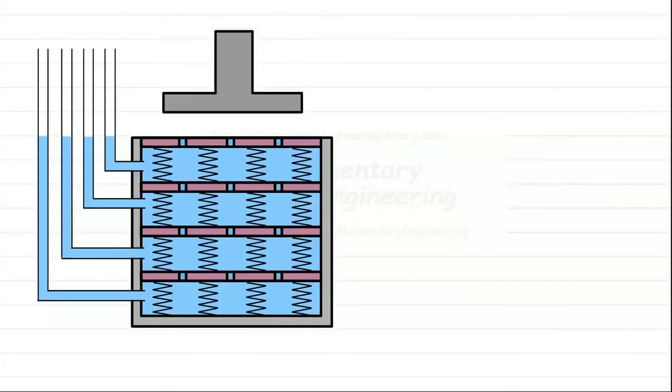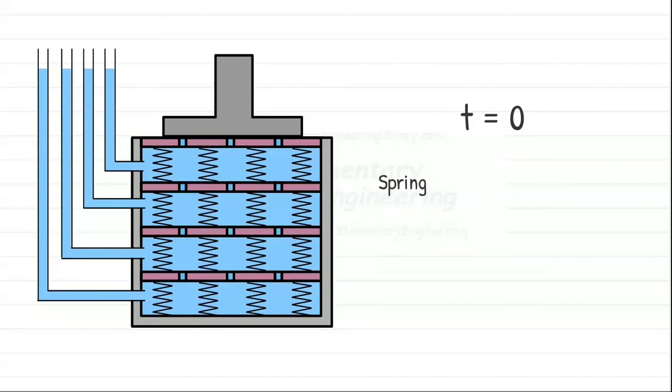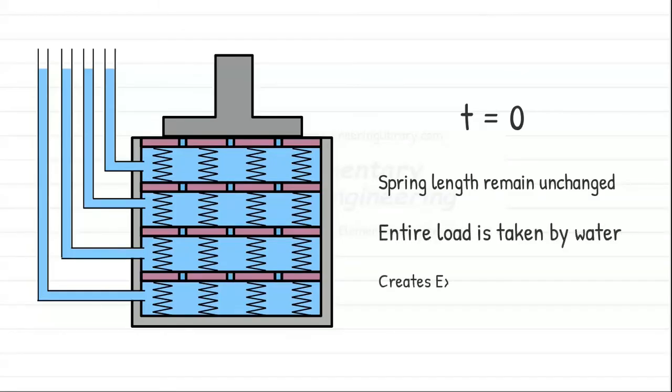When a load is applied to the top piston, water cannot escape instantly through the perforations. The springs remain at their initial length as they cannot carry load until they are compressed. Therefore, the entire load is initially taken by water creating excess pore water pressure. The water in all the piezometric tubes rises to the same elevation above the original water level in the vessel. It is called excess pore water pressure because it is in excess of the original hydrostatic pressure.